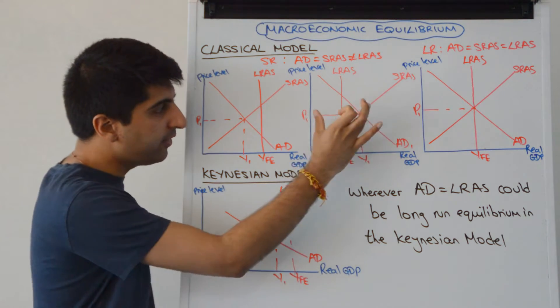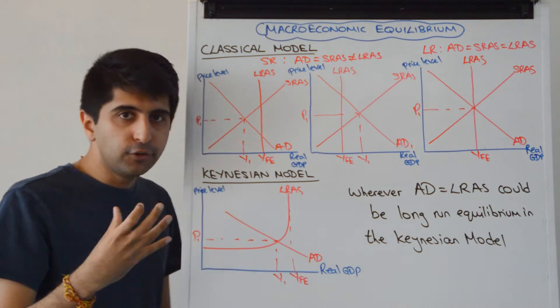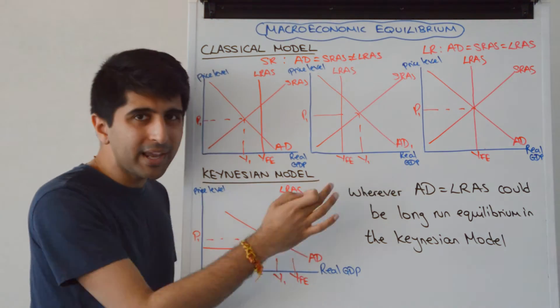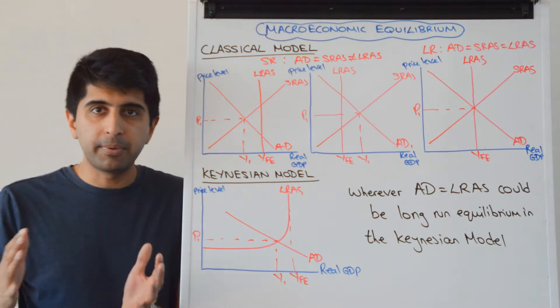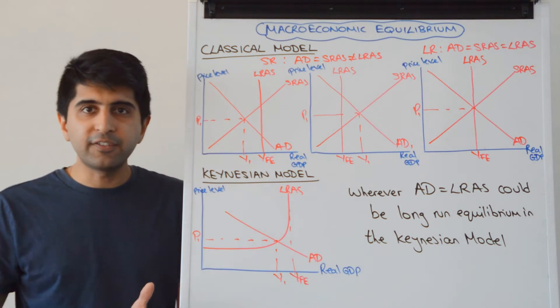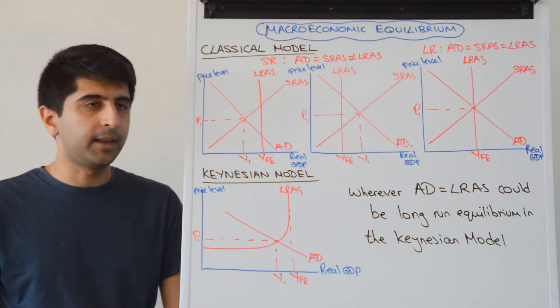We can also look at it in this way where AD equals SRAS is not equal to LRAS. We're producing an output level in the economy which is greater than YFE, and that cannot persist in the long run. In the long run we get back to YFE. This is known as an inflationary gap or a positive output gap. Again, my output gaps video covers that in more detail.